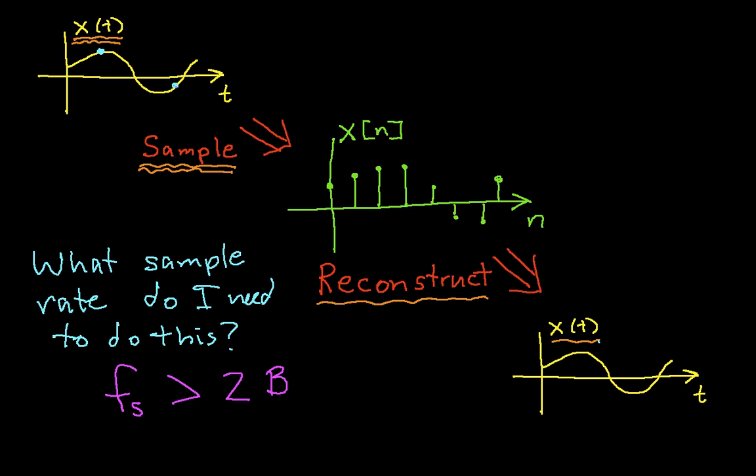So again, for those of you that are impatient, this is the answer. You find the bandwidth of your signal, you double that, and then make sure that your sample frequency is larger than that. And typically, in real life, you want it to be at least two and a half to three times the bandwidth. So let's give you a brief explanation about why this is the case. And this explanation requires that we look at things in the frequency domain.